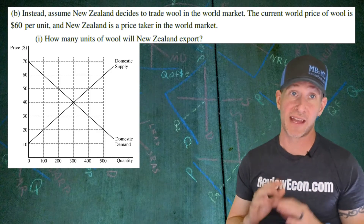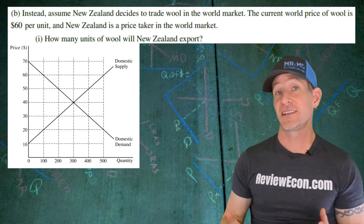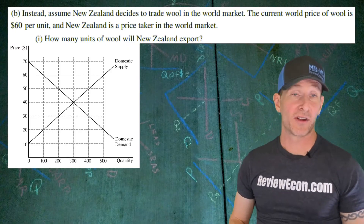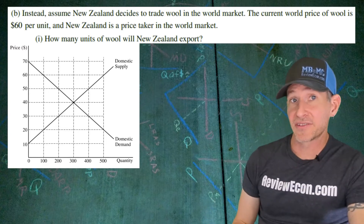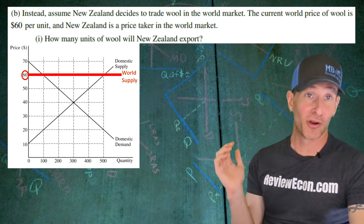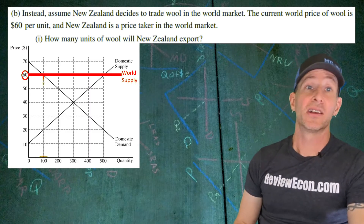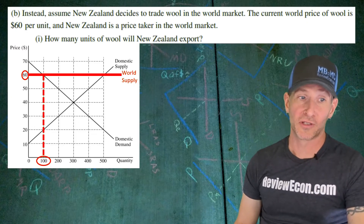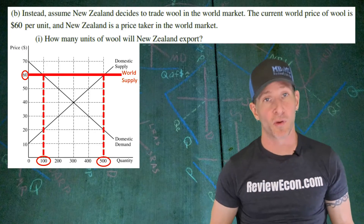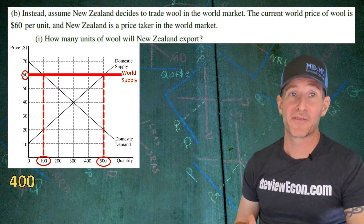For part B, we now assume that New Zealand is trading wool with the rest of the world, and the current world price for wool is $60 per unit. New Zealand is a price taker — too small to impact the overall world market. We place the world supply at $60, perfectly elastic, indicating New Zealand is a price taker. For part BI, we determine how many units New Zealand will export. At the $60 world price, New Zealand consumers demand 100 units of wool, while producers make 500 units. The difference — 500 minus 100 — equals 400 units of wool exported.